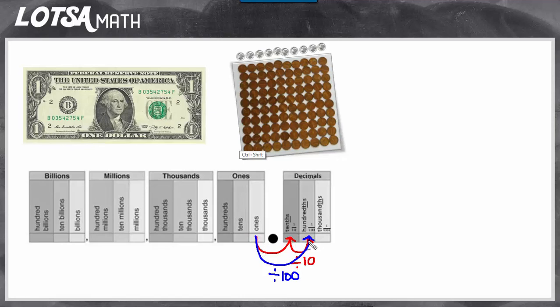So if you understand that, you can understand why sometimes people call the tenths place the dimes place and the hundredths place the pennies place. Now let's look at some examples.